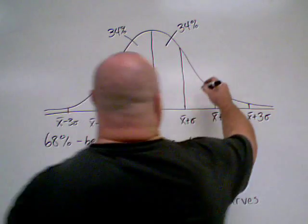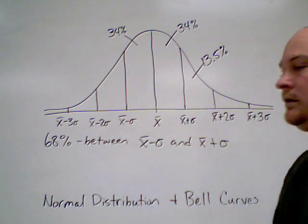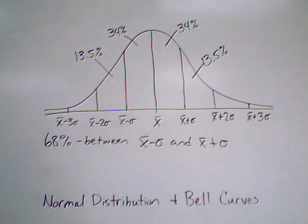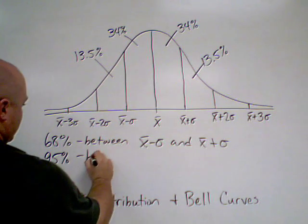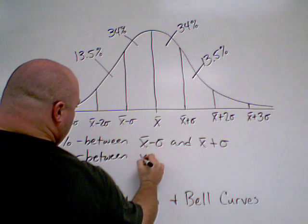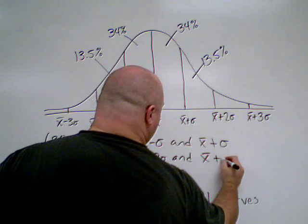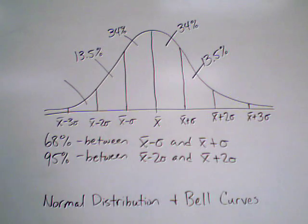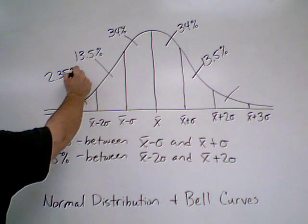The next sections going out have 13.5%, and it's the same on both sides. If you add these up, you'll find that 95% is going to be between our mean minus two standard deviations and our mean plus two standard deviations. So we're including a lot of our data here. The next sections going out have 2.35% each.